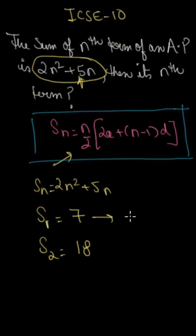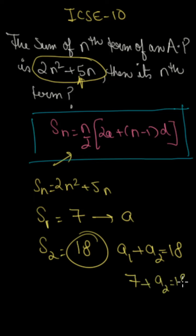So the first term is a1, then a equals 7, and a first term plus second term, we get 18. So if we put it in place of first term, then the sum of second term is 18. So the second term is 18 minus 7, which is 11.